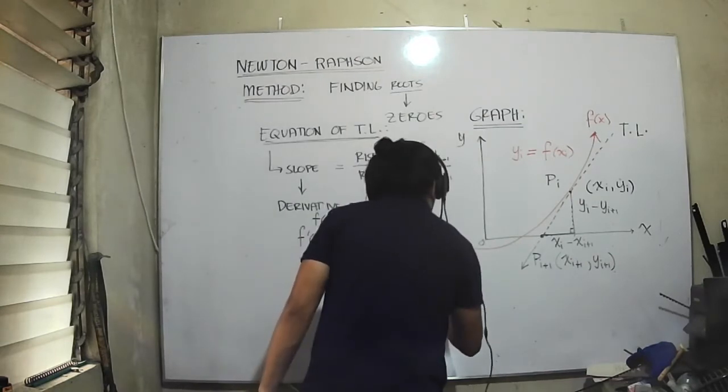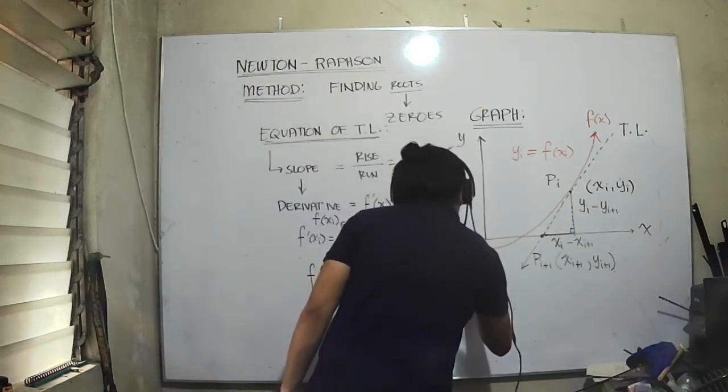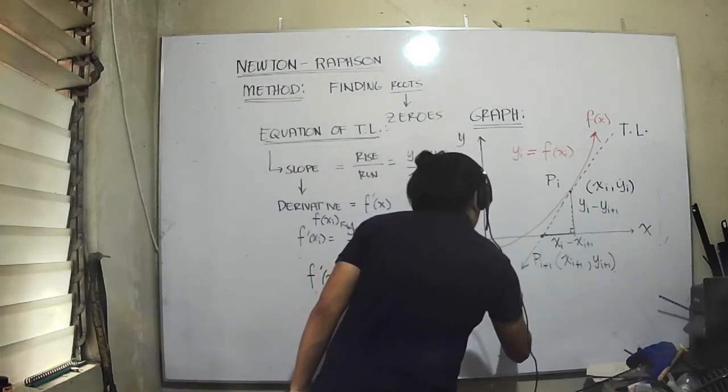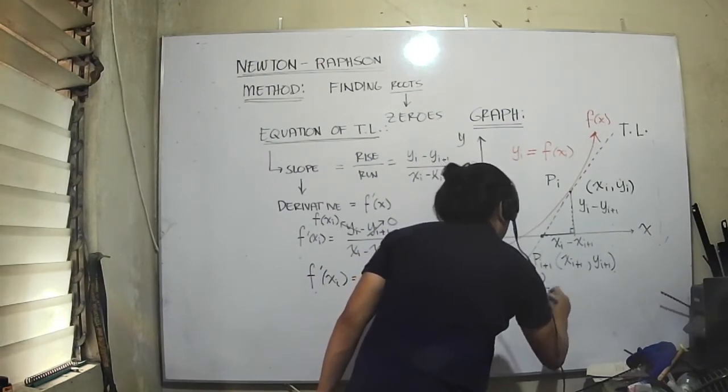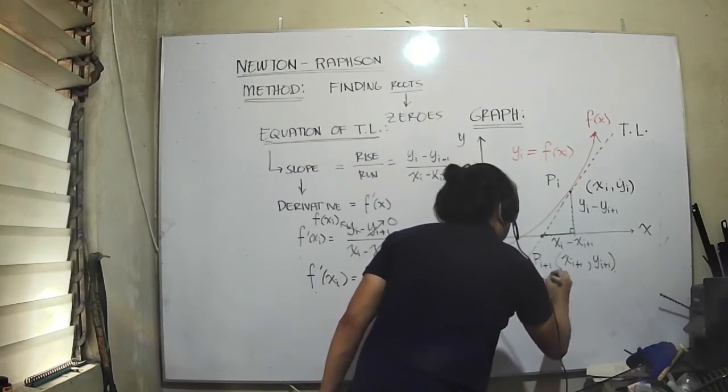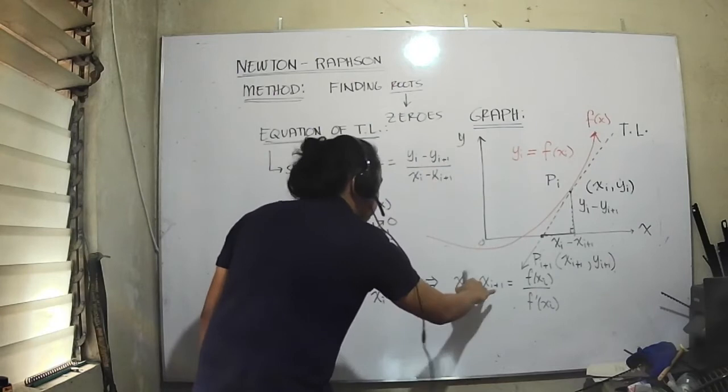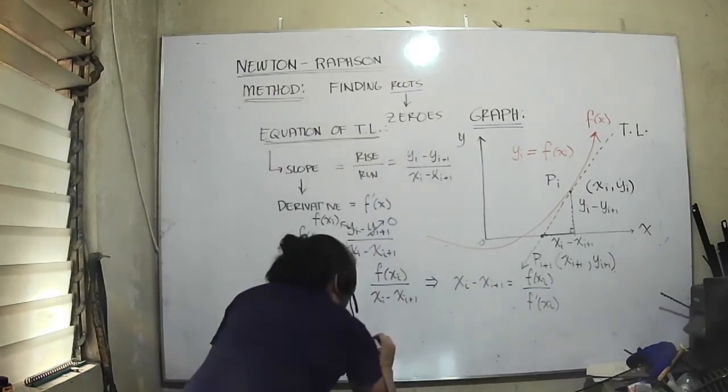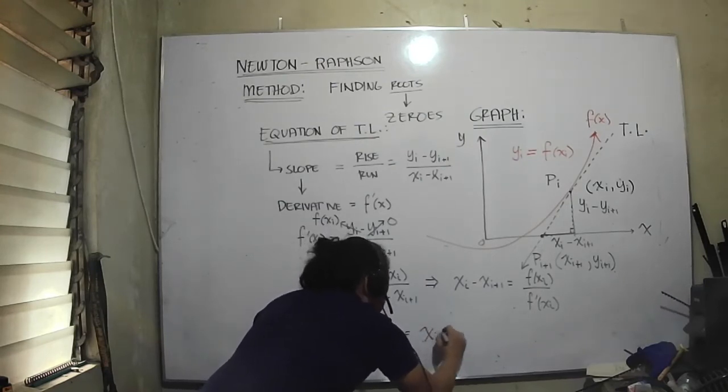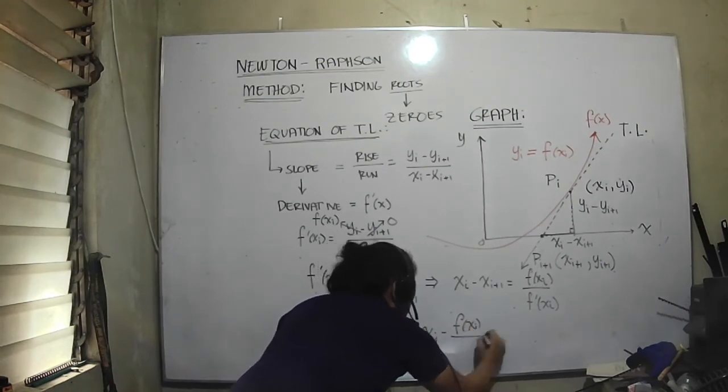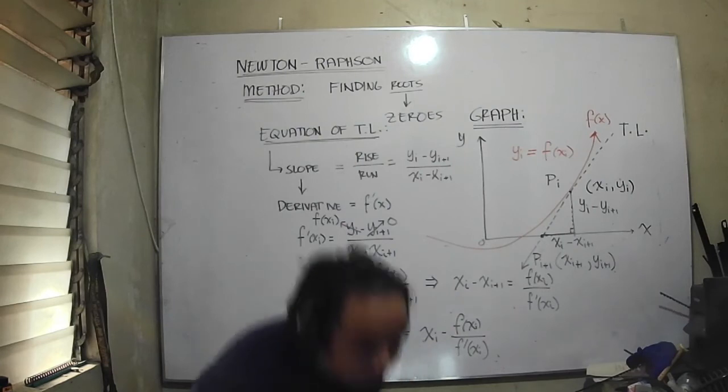Rearranging these terms to arrive at the final expression: xi minus xi+1 equals f of xi divided by f prime of xi. Then rearranging these terms, we have the expression xi+1 equals xi minus f of xi divided by f prime of xi.